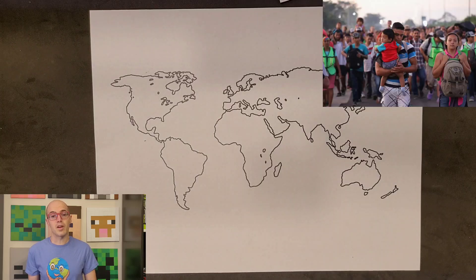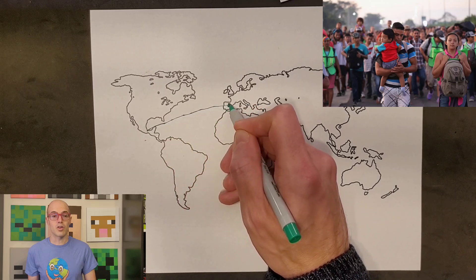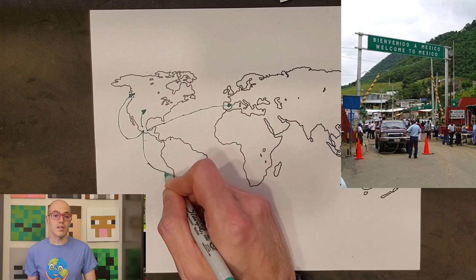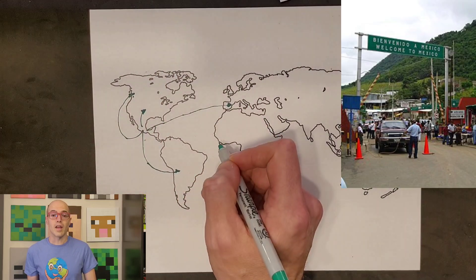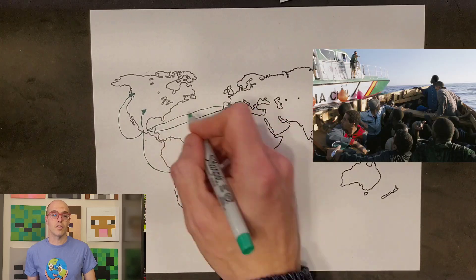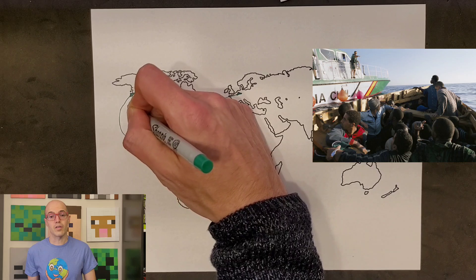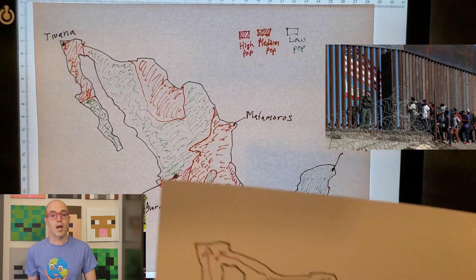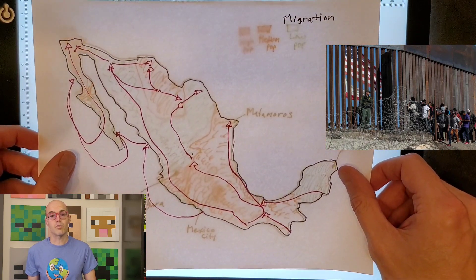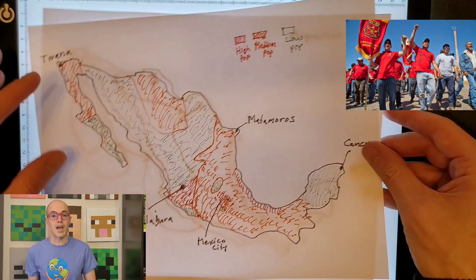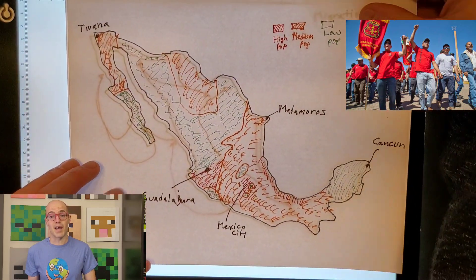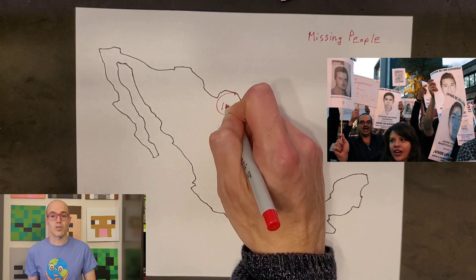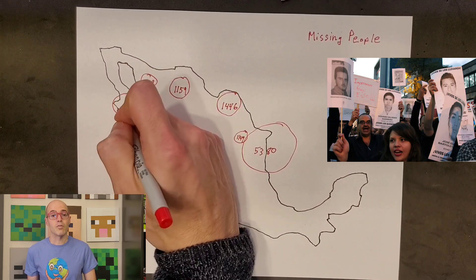Mexico has also experienced emigration, with many Mexicans moving abroad for education, employment, or resettlement. Popular destinations for Mexican emigrants include the United States, Canada, and Europe. Moreover, internal migration within the country is influenced by seasonal factors such as agricultural cycles, leading to temporary movement of workers between rural and urban areas. Government policies and economic trends play a significant role in shaping migration patterns, with initiatives aimed at managing migrant labor and promoting balanced regional development. Despite efforts to regulate migration, issues such as undocumented migration and exploitation of migrant workers remain challenges for Mexico.